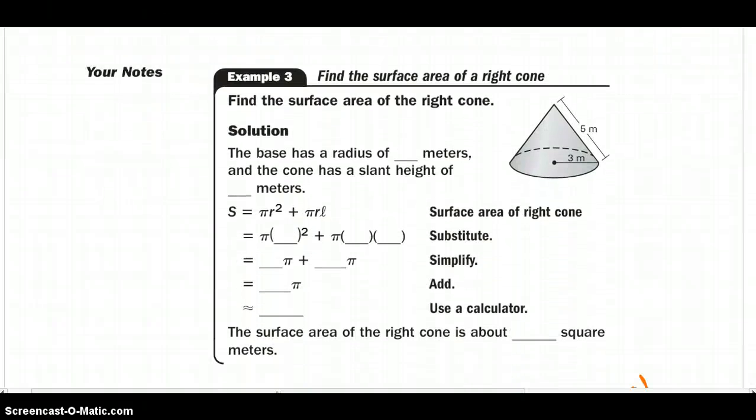All right, and last, using the formula to practice, we want to find the area of the right cone. Right tells us that we can create that height right there of the cone. So the base has a radius of 3 meters. Just looking at that as a 2D circle, we can still say our radius is 3. And the cone has a slant height of 5 meters, from the vertex to the base would be our slant height right there.